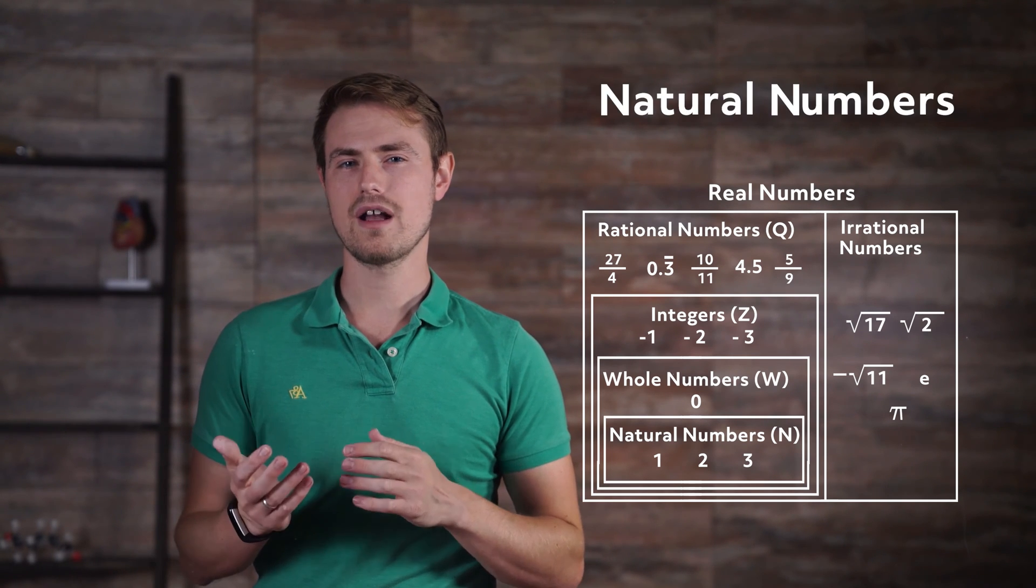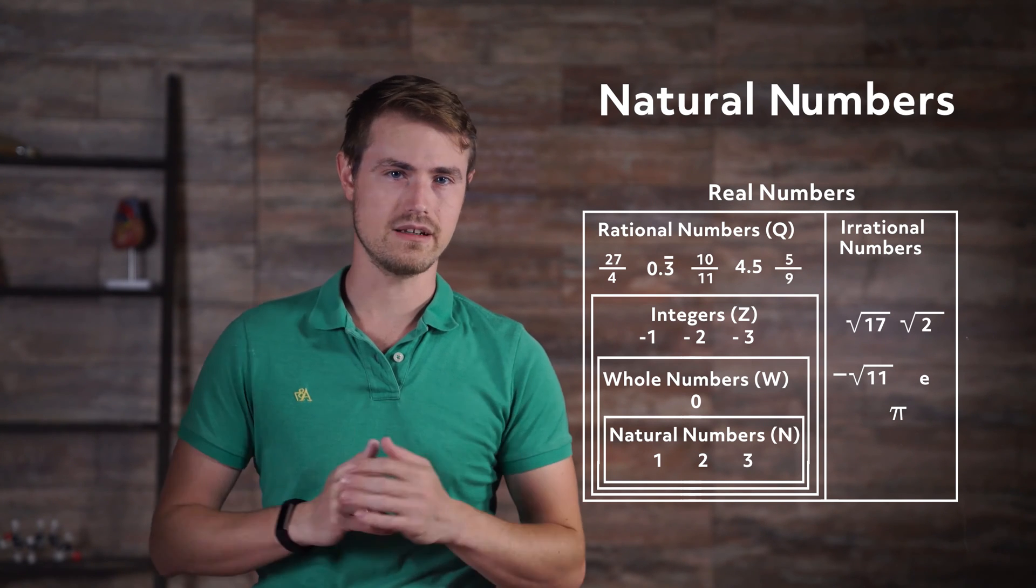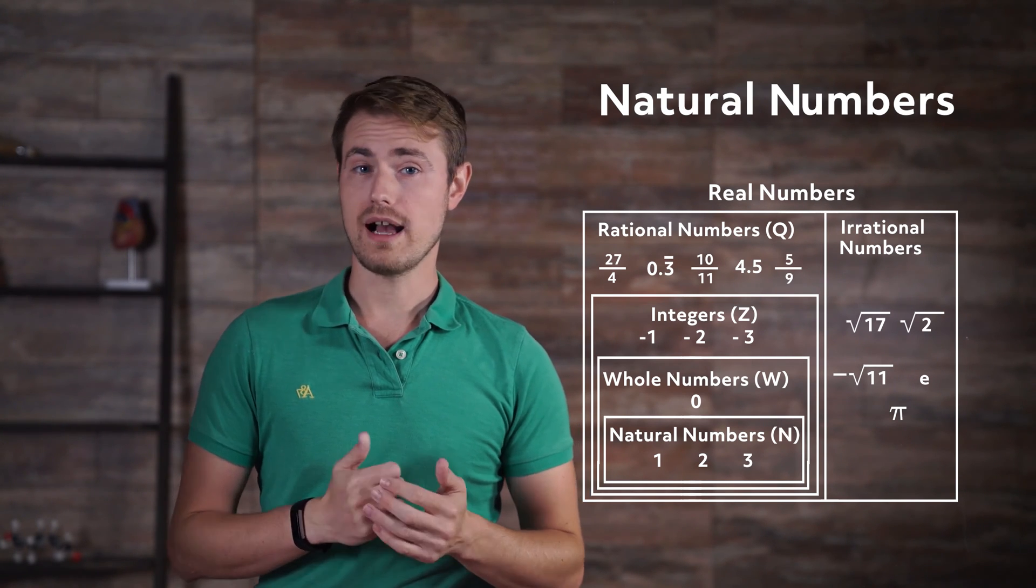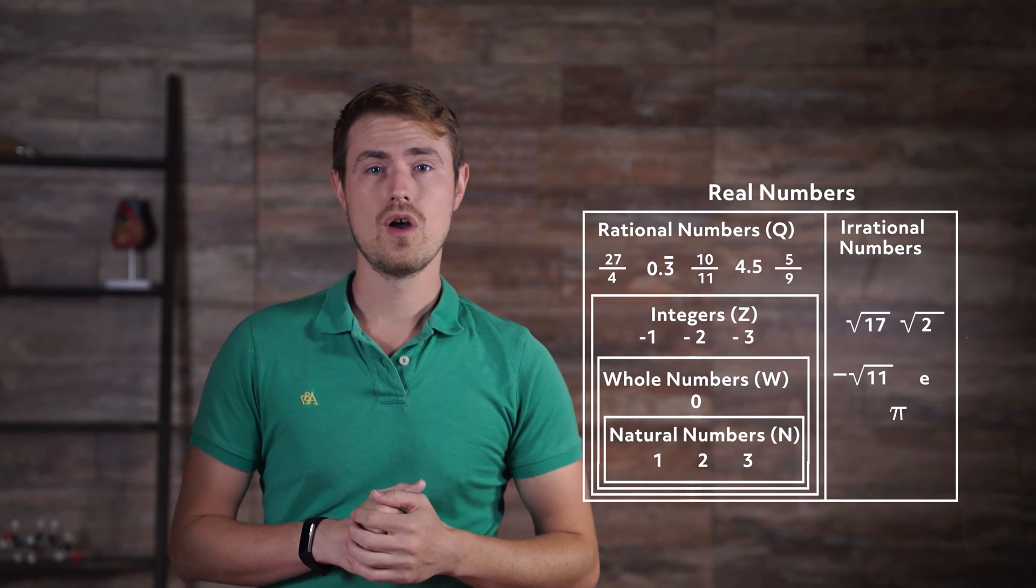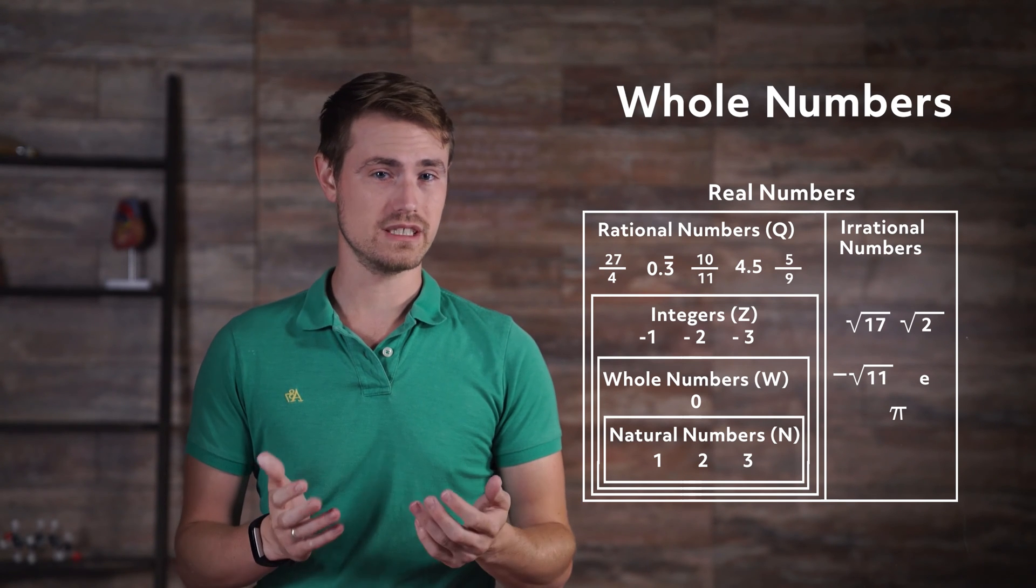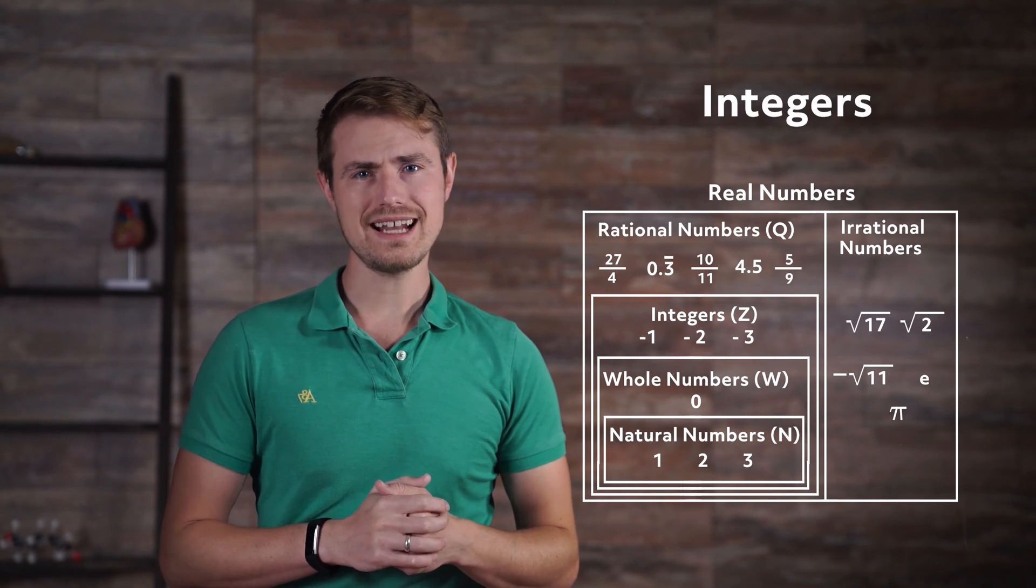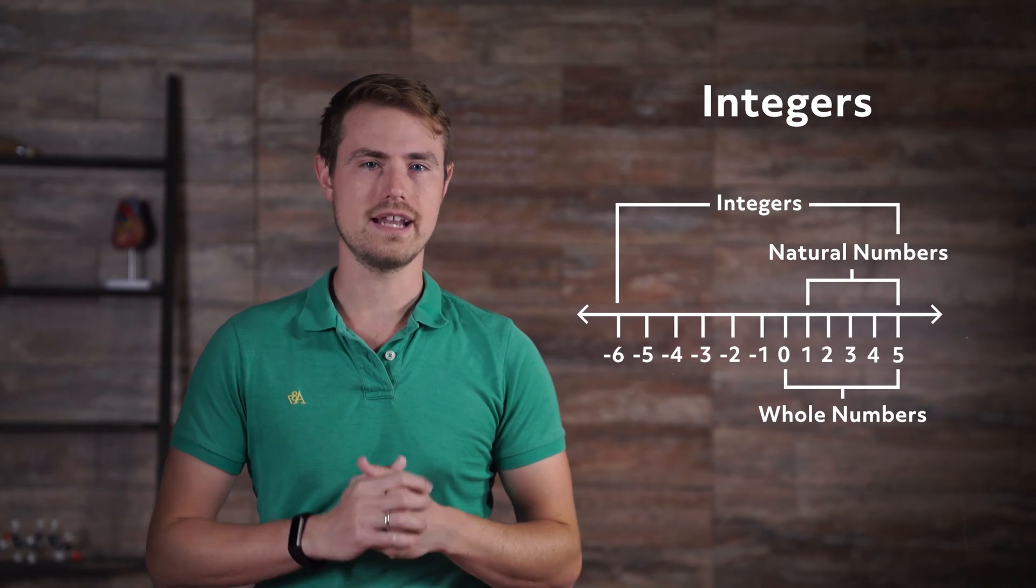The natural numbers comprise the smallest subset, also known as the set of counting numbers. These are all positive non-decimal values starting at 1. Whole numbers are the natural numbers plus the value of 0. The integer set of numbers includes whole numbers and all negative non-decimal values.